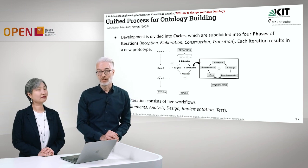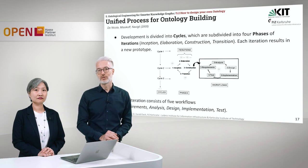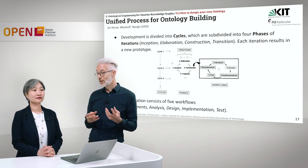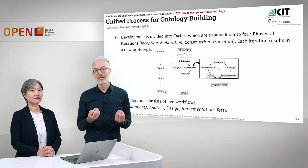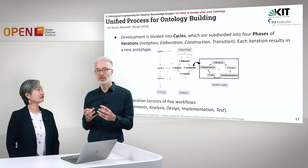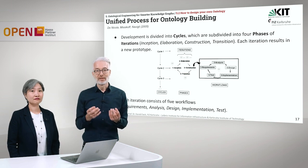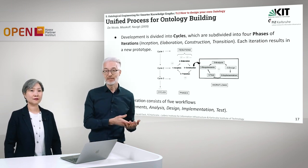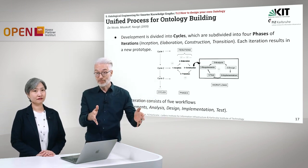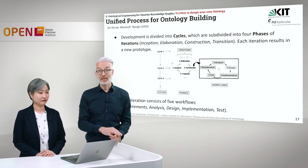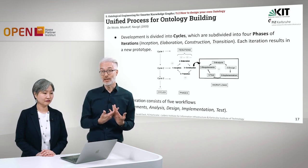One of them is the Unified Process for Ontology Building, introduced in 2005 by Nicola Misikov and Navigli. Development is divided into cycles, broken down into phases of iterations. Each phase begins with inception, then elaboration, construction, and transition to the next phase, each resulting in a new prototype. Iterations have five workflows: requirements analysis, analysis of requirements, design, implementation, and testing. This is a more engineering-related approach for creating ontologies.